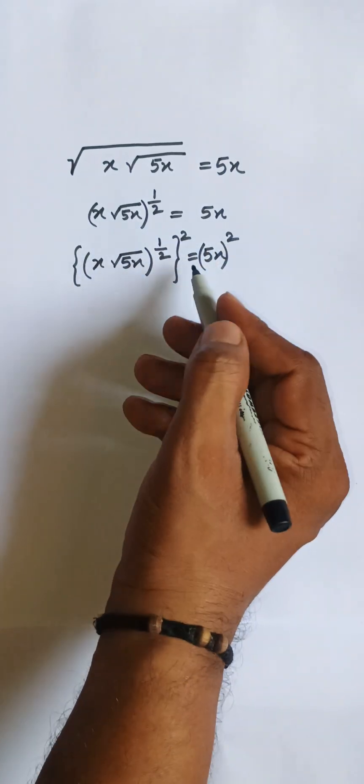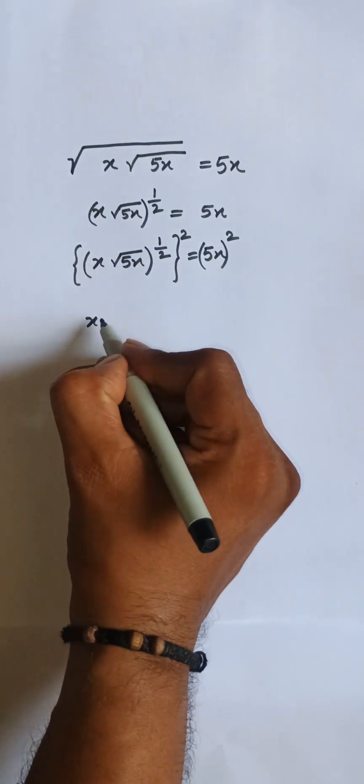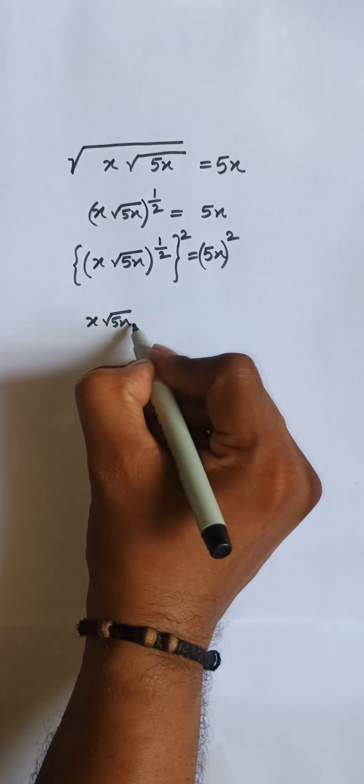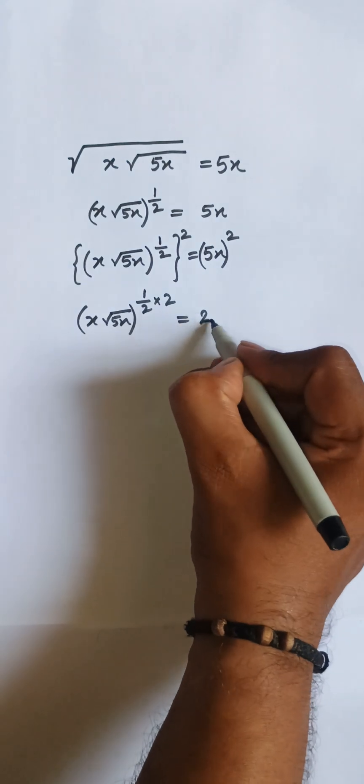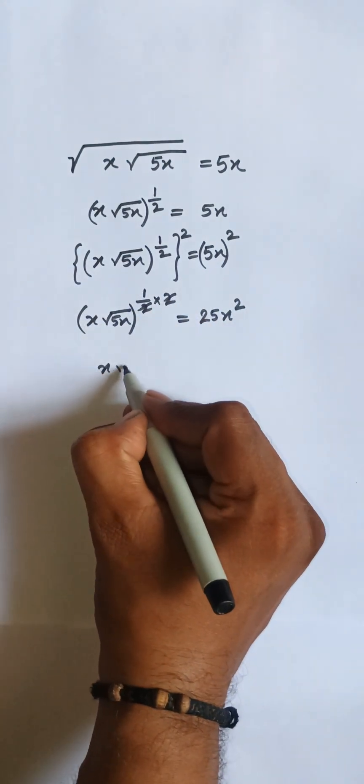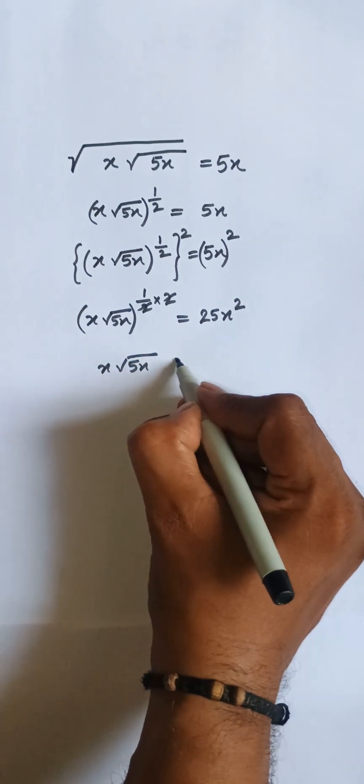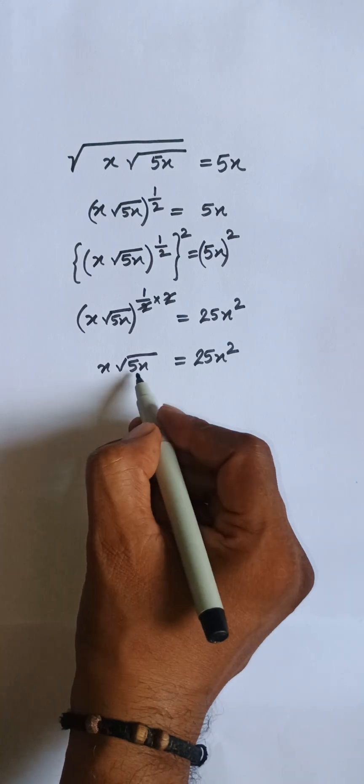So here we have x√(5x), and then 1/2 multiply by 2. Here we have 25x². This is cancelled, so we have x√(5x) equals 25x².